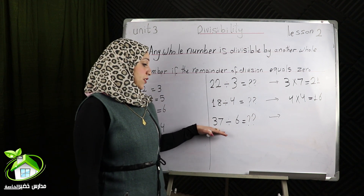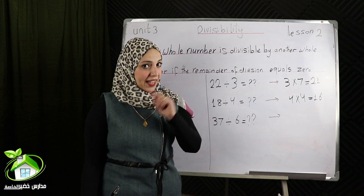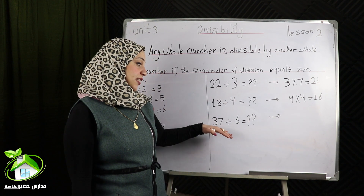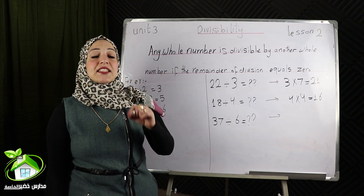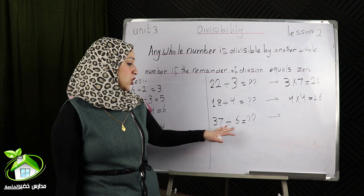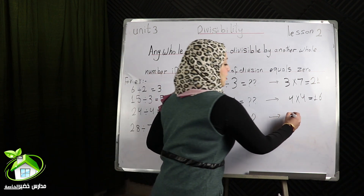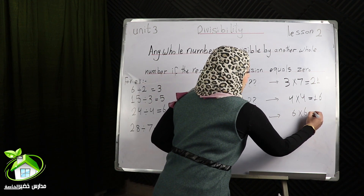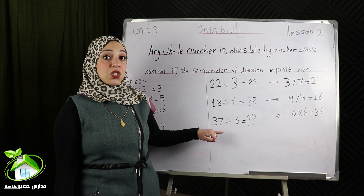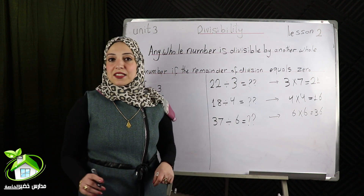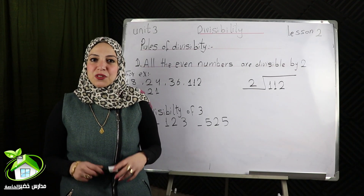The last one: 37 divided by 6 equals what? I can't find 37 in the timetable of 6. So what can I do? I get the nearest number in the timetable of 6 to 37. Yes, 36. 6 times 6 equals 36 and the remainder equals 1. So 37 isn't divisible by 6. Some rules of divisibility.